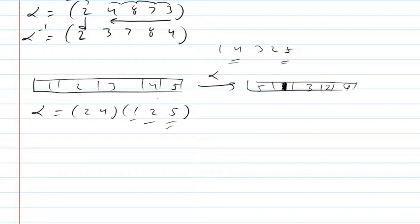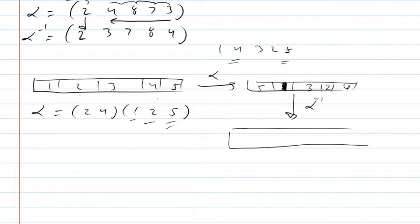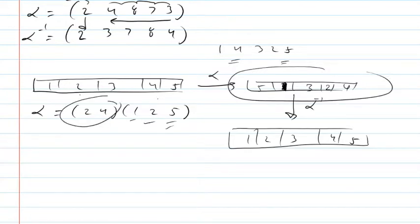Now the inverse — if I do the inverse to this, it should undo the move. To get into this state, first I swapped 2 and 4, then I did the cycle where 1 goes to 2, 2 goes to 5, 5 goes to 1.